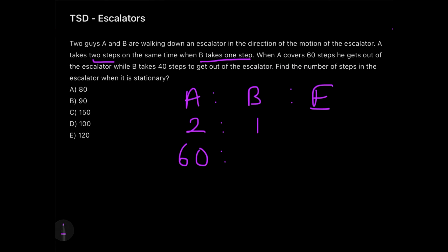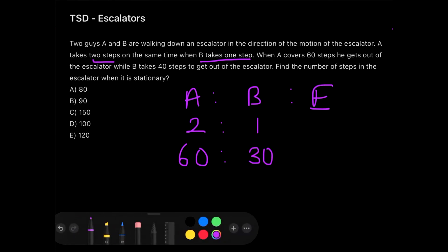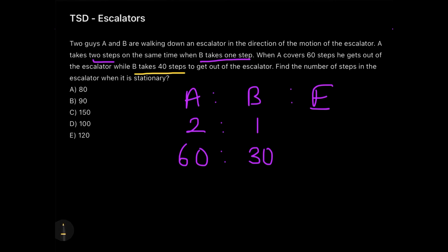Now based on this comparison, if the second line says that A covers 60 steps to complete the escalator or get out of the escalator, then according to the ratio given above, I should get 30 here as the ratio says. But if you go back to the question and check, here you will see that B takes 40 steps.